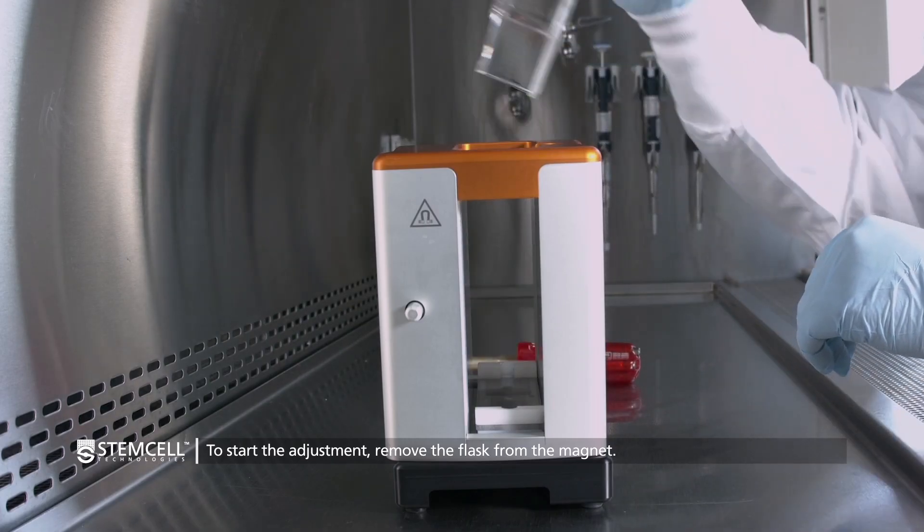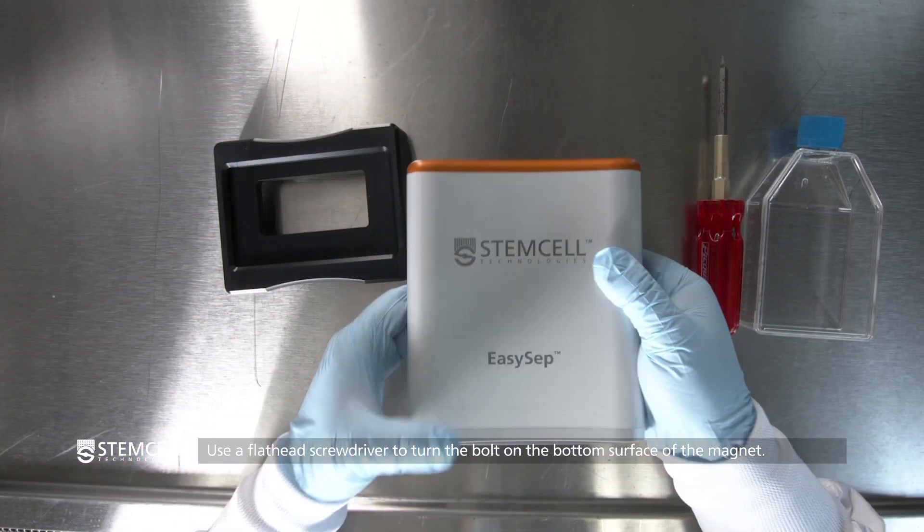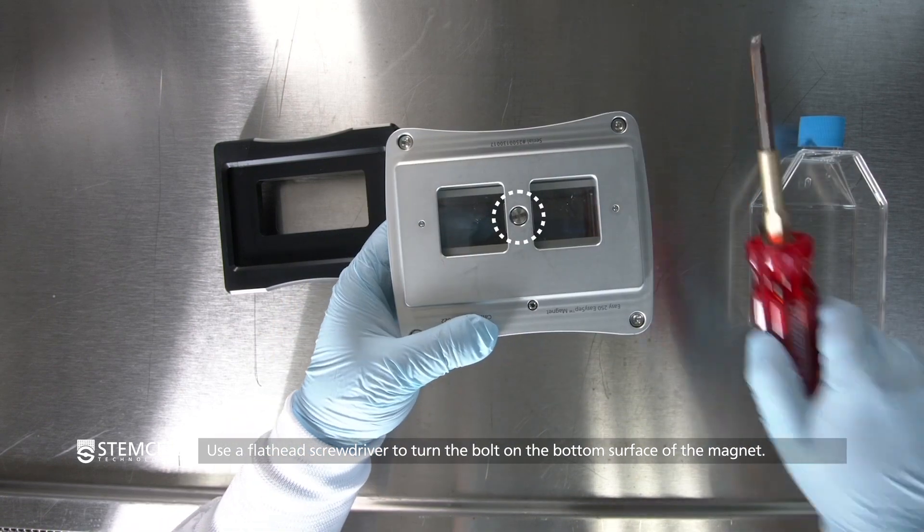To start the adjustment, remove the flask from the magnet, place the magnet on its side or upside down, and use a flathead screwdriver to turn the bolt on the bottom surface of the magnet.